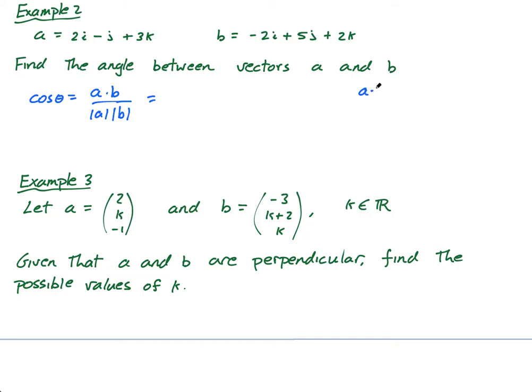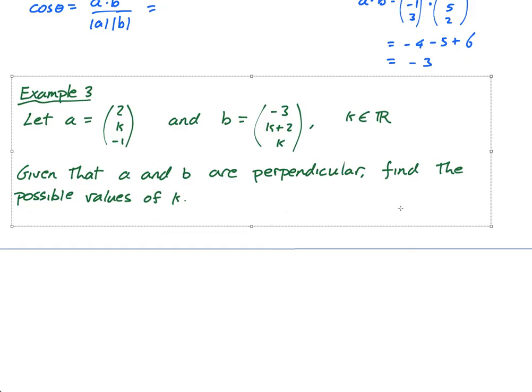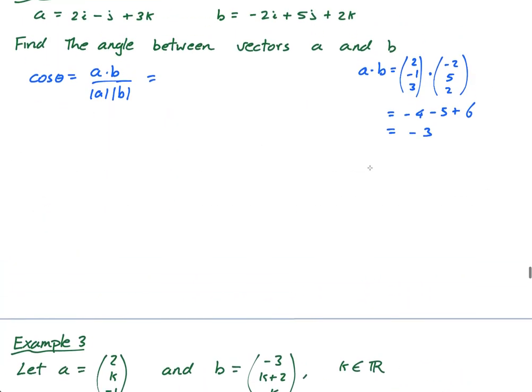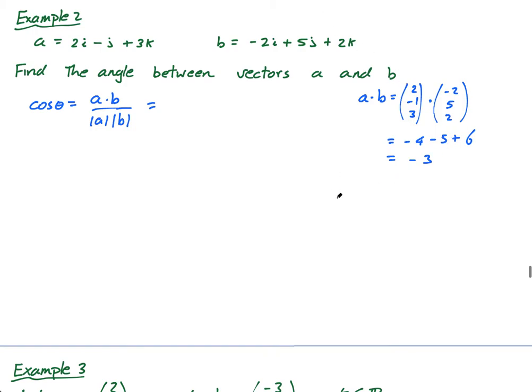Which is equal to, now at the side here, I'm going to do a dot b. A dot b equals, and remember I said when I first introduced you to vectors, I always prefer working with this form, not IJ and K. So a dot b is negative two, five, two. This equals negative four minus five plus six equals negative nine plus six is negative three.